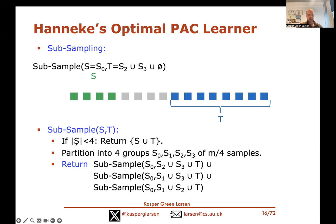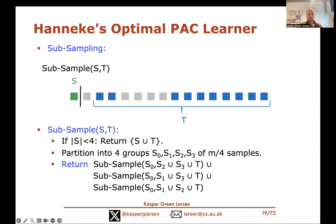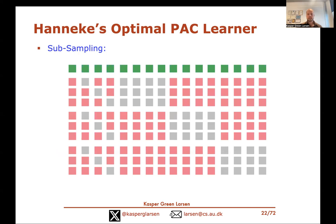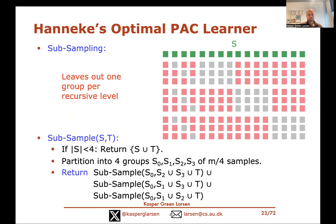Following one path in the recursion: the new training data is the first quarter S_0, and T becomes the last two quarters. We partition again, recurse further, and eventually reach the base case where we add S to T and output the resulting subsample. This was only one path in the recursion tree — following the whole recursive procedure generates all these different subsamples, each leaving out one group of data per recursive level.